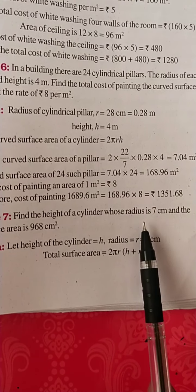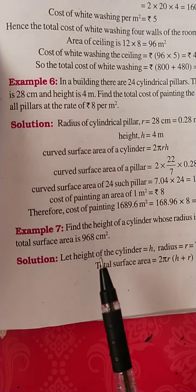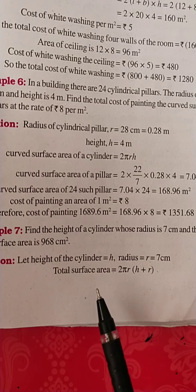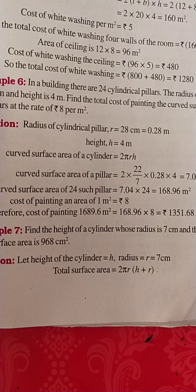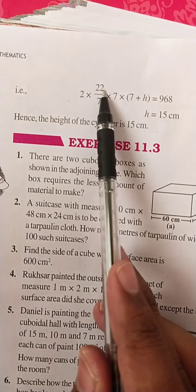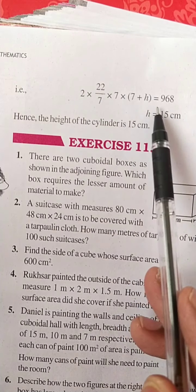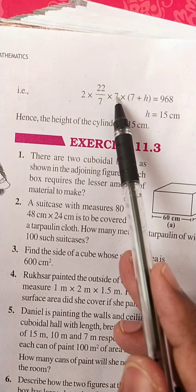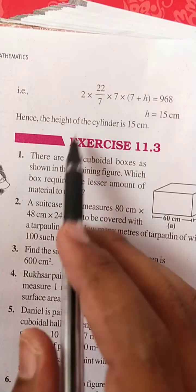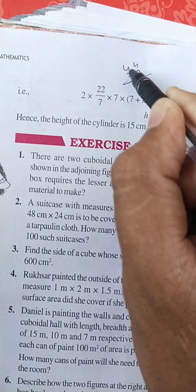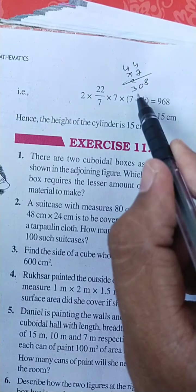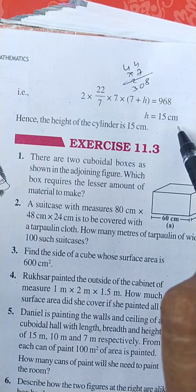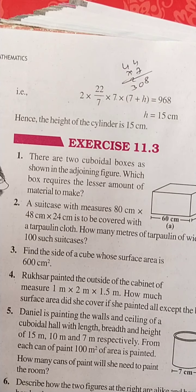Find the height of a cylinder whose radius is 7 centimeters and total surface area is 968 square centimeters. Let height be H. Total surface area equals 2πR(R plus H). Substituting: 2 times 22/7 times 7 times (7 plus H) equals 968. The 7s cancel, giving 44 times (7 plus H) equals 968. So 44 times 7 is 308, and 44H equals 968 minus 308, giving H equals 15 centimeters. The height of the cylinder is 15 centimeters.